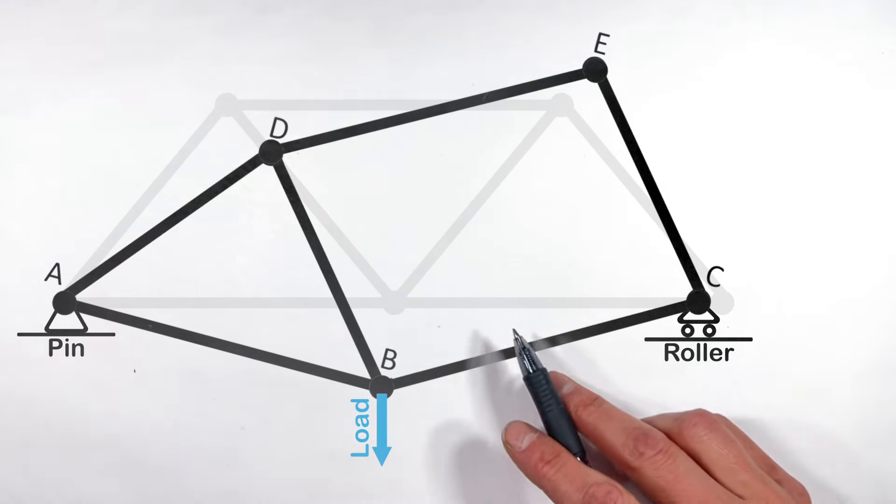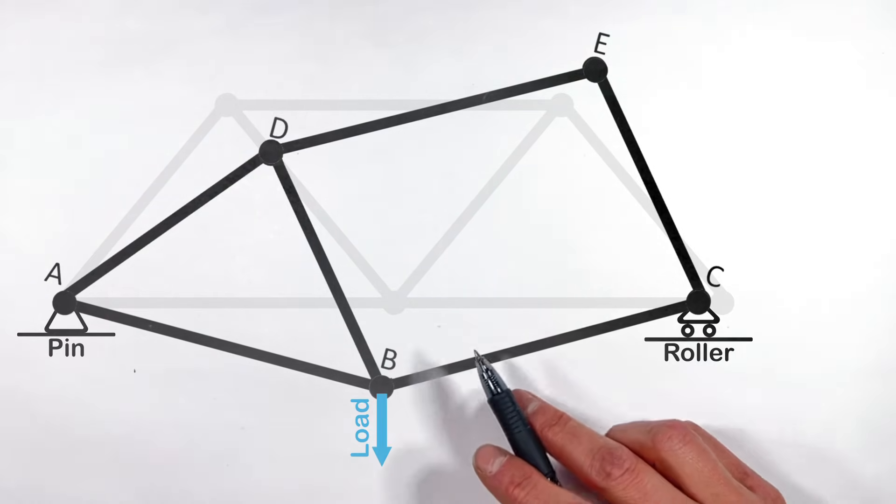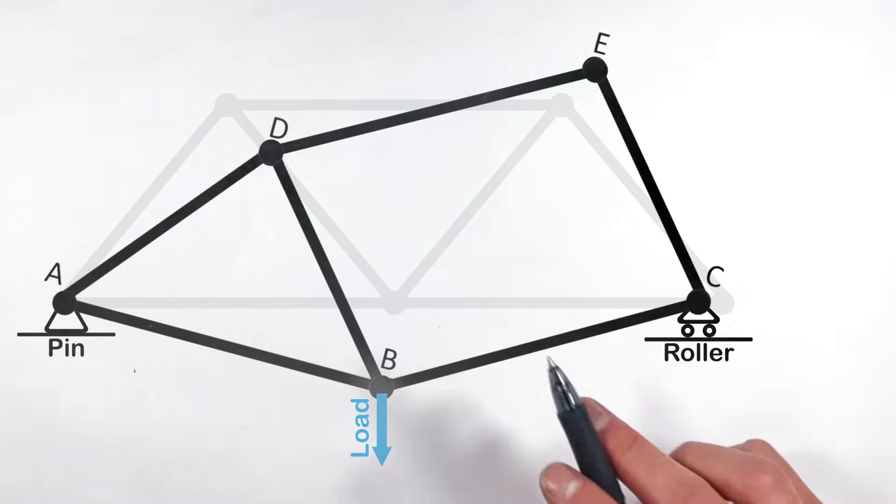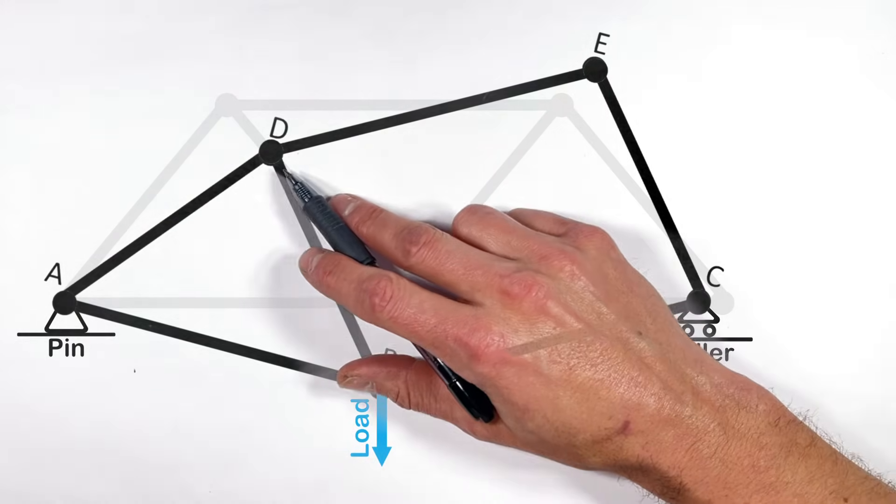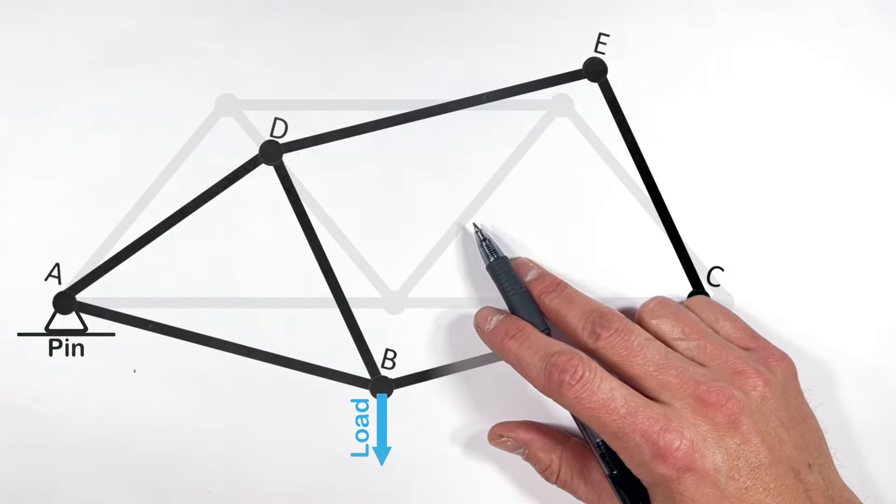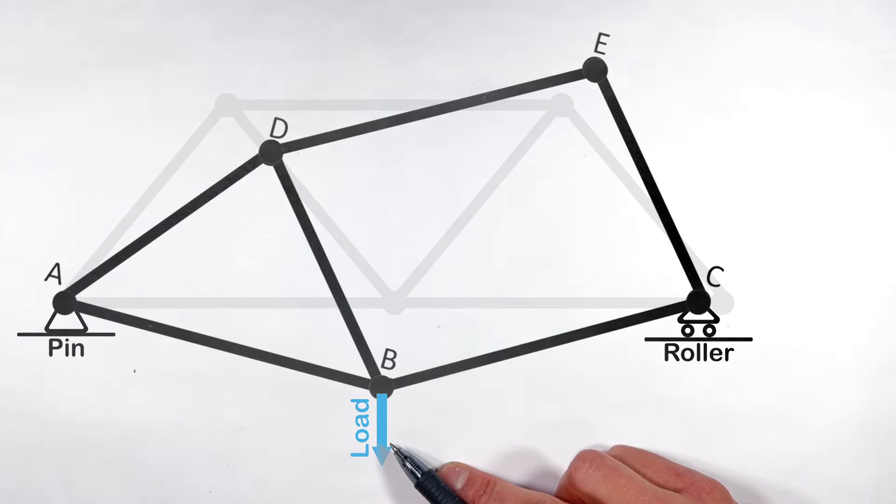And it can be kind of hard to imagine exactly what's going to happen as this whole thing collapses. I mean, yeah, it's animated here, but think about what's going on. D is going to move to the right over here as B moves down and to the left.